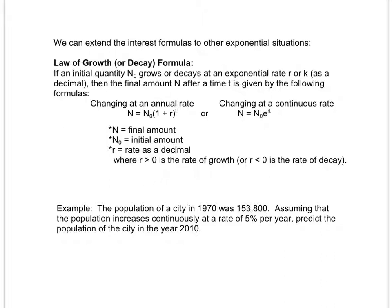So we have the law of growth or decay formula, which if we're given some initial quantity that we call n sub zero, very similar to p in your interest formulas, and we are either growing or decaying at a rate of r, sometimes also referred to as k, again very similar to your interest rate. Again, we change it to a decimal. And then our final amount n, similar to a, after a time t, also by years, just like in our interest formula, is given in one or two different formulas.